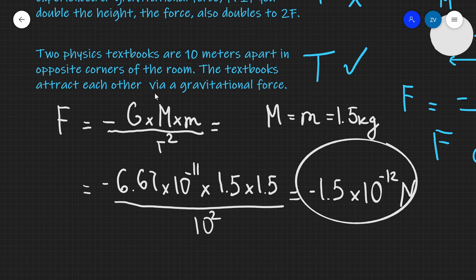This force is incredibly small — so small that it is easily overcome by friction. However, for something incredibly massive such as the Earth, Jupiter, or the Sun, this gravitational force becomes incredibly significant. When applied to everyday objects the force is there, but very very small indeed. I hope you've enjoyed this introductory video to Newton's law of gravitational attraction — feel free to drop a comment below.